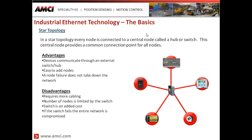To start with, we're going to go over the basics of each of those three networks, the first being a star topology. In a star topology, every node is connected to a central node, called a hub or a switch — a switch being more common today. This central node provides a common connection point for all nodes. In an industrial network, you typically would have a PLC, and then all your peripheral products communicating to that PLC through that industrial switch.